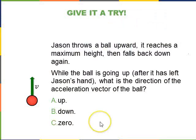Okay, so we'll do three give it a try questions in a row based on that video. So Jason throws a ball upward, it reaches a maximum height, and then falls back down again. While the ball is going up, but after it has left Jason's hand, what is the direction of the acceleration vector of the ball? A: up, B: down, C: zero. So please pause the video, think about that, and then we'll discuss the answer.